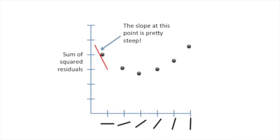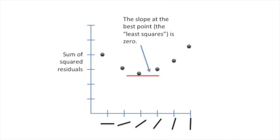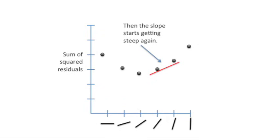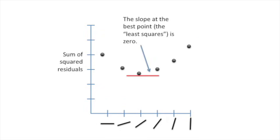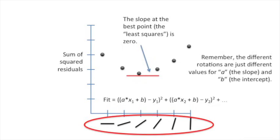The derivative tells us the slope of the function at every point. The slope at the point on the far left side is pretty steep. As we move to the right, we see that the slope isn't as steep. The slope at the best point, where we have the least squares, is zero. After that, the slope starts getting steep again. Let's go back to that middle point, where we have the least squares value and the slope is zero. Remember, the different rotations are just different values for a, the slope, and b, the intercept.